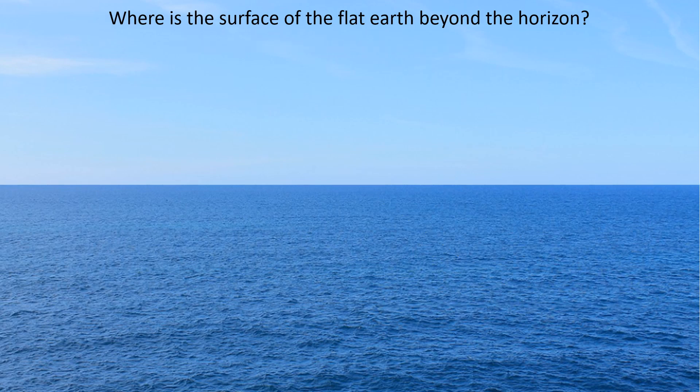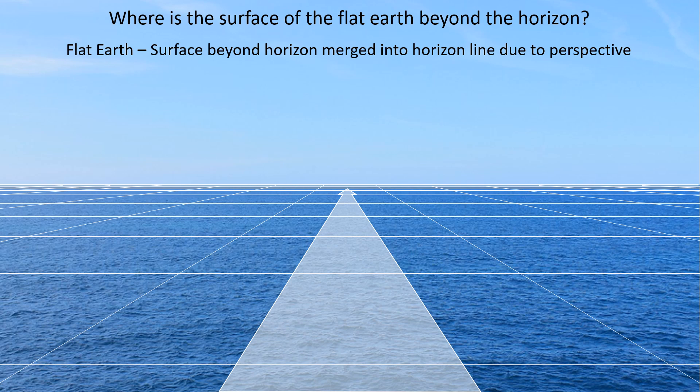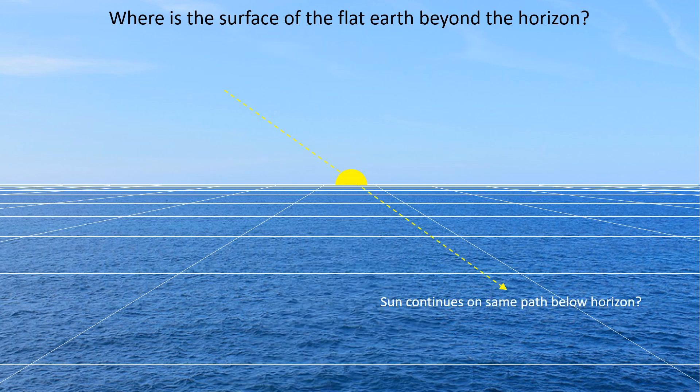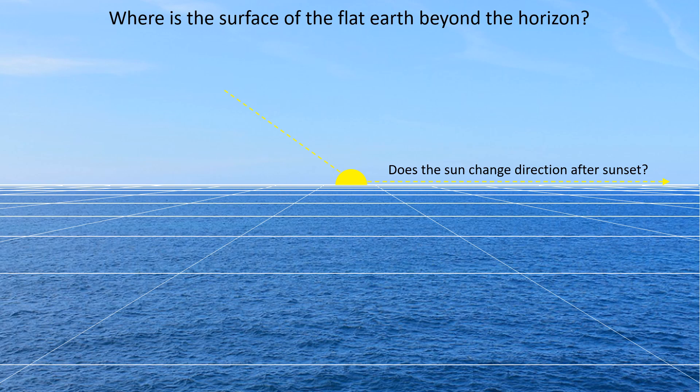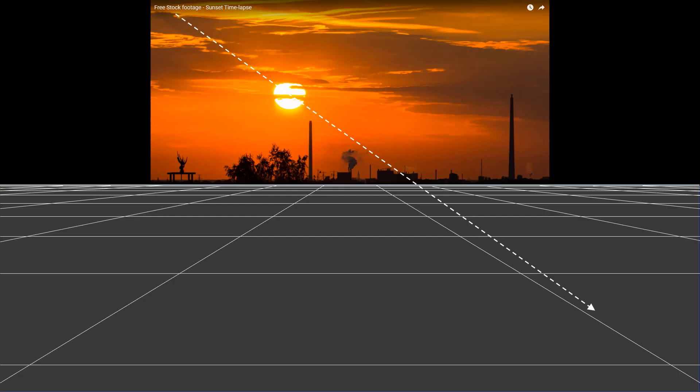But where is the surface of the flat earth beyond the horizon? It doesn't curve down like it does on the globe. On a flat earth, the surface beyond the horizon would be merged into the horizon line due to perspective. If that's true, then how could the sun continue on the same path below the horizon? That would mean the sun is traveling below the surface of the earth. So do flat earthers think the sun changes direction after sunset to go around the north pole? The flat earth model is already having a big problem explaining this observation.